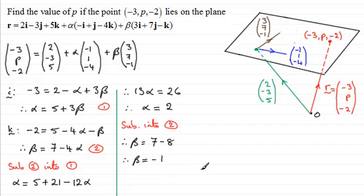And now, all I need to do to get p is to compare the j components. And if I compare the j components, I've got p = -3. And then I've got α times 1, which is just α, and α is 2. So that's going to be +2. And then I've got +7β. Well, β is -1. So that's going to be 7 × -1, which is -7. And so work that out, and you therefore end up with p equaling -8.